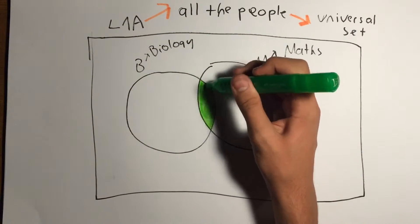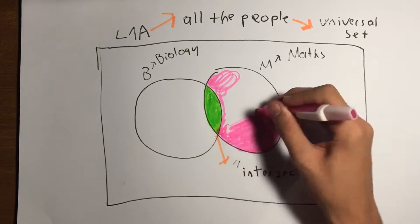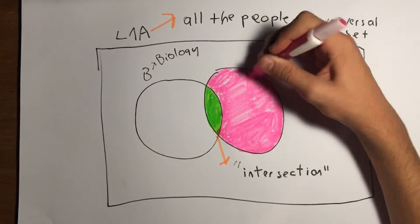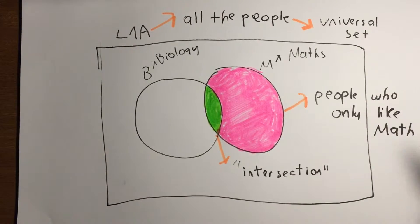The group who likes both of them is called intersection. The part that consists of people who only like math is called the difference.